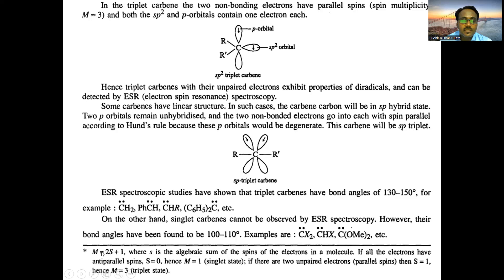To summarize the spin multiplicity formula: m = 2s + 1. For antiparallel (opposite) spin, s = +1/2 + (−1/2) = 0, so m = 2(0) + 1 = 1 — the singlet state.